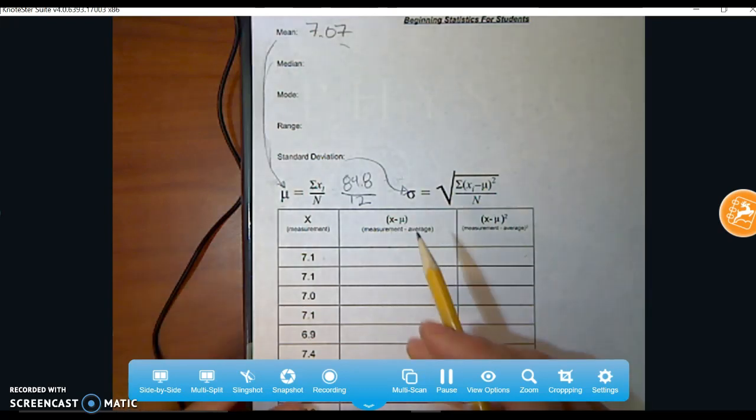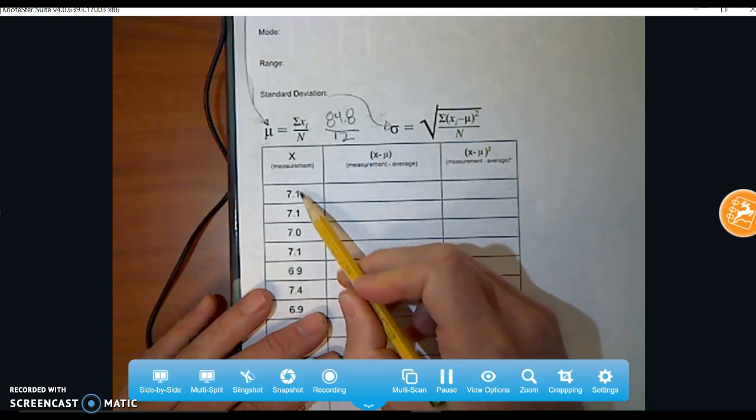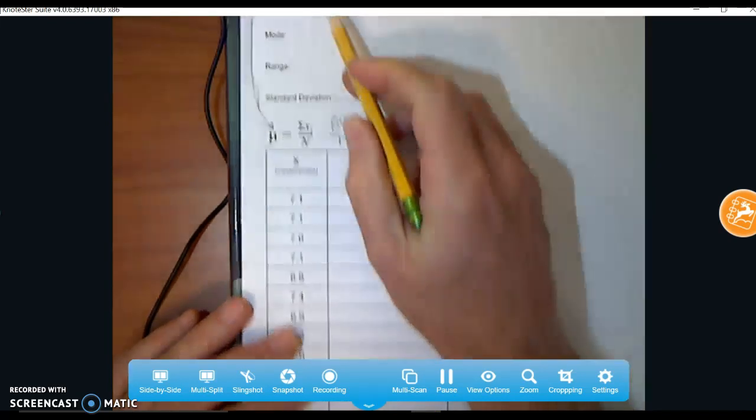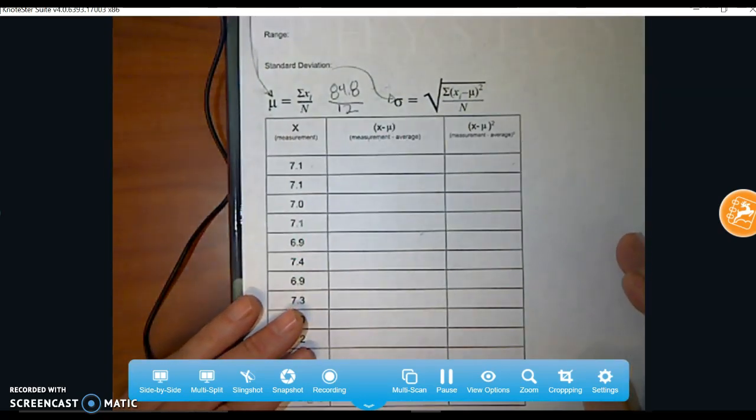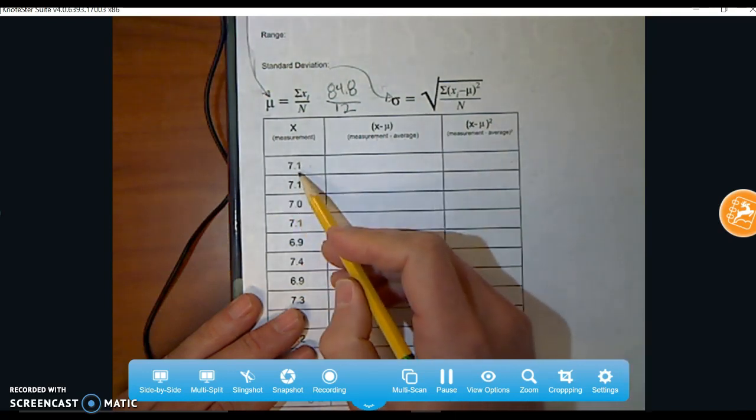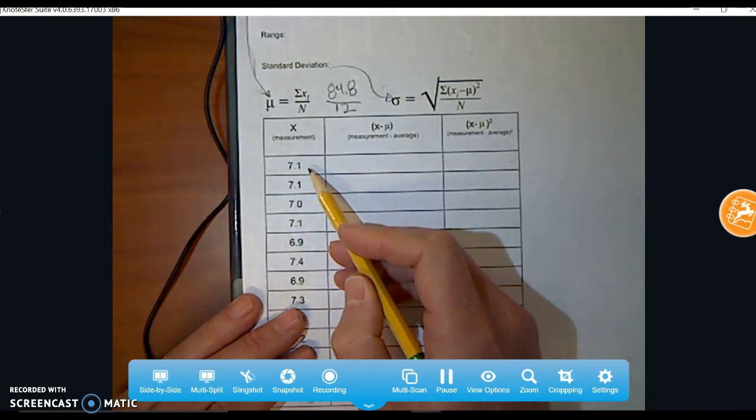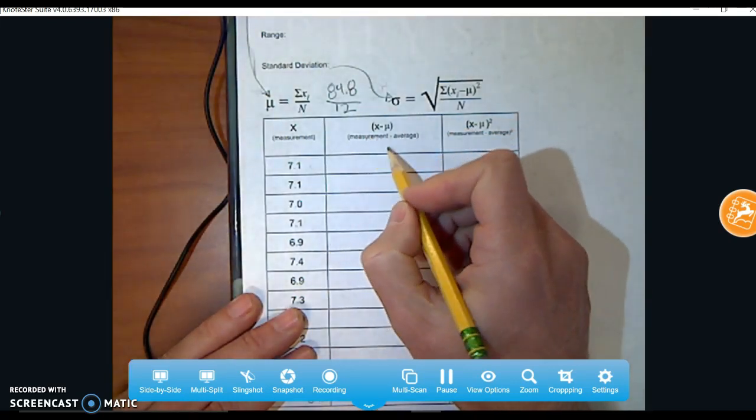Two steps. First thing I want to do is I want to calculate the difference between the measurements, which are these, and the average, which we just calculated to be 7.07. So that's really simple. We're just going to take the measurement 7.01 and subtract 7.07. When I do that, measurement minus the average.